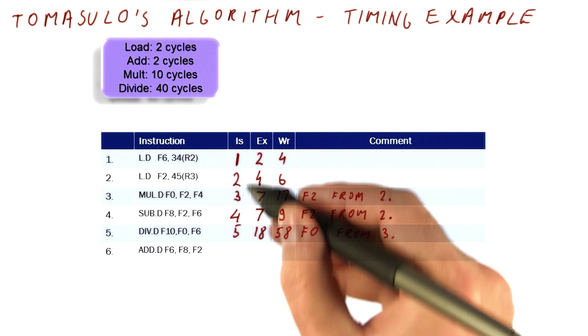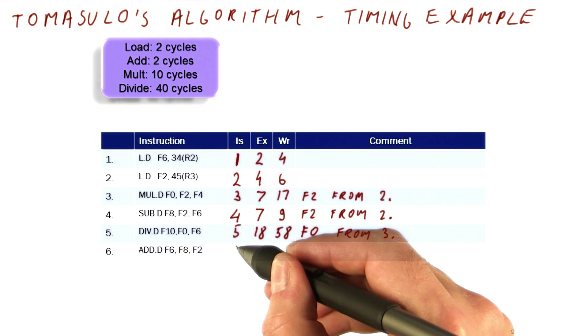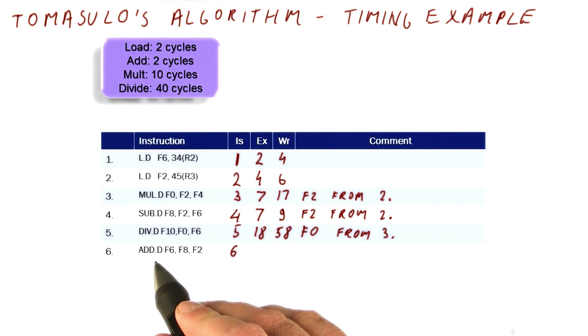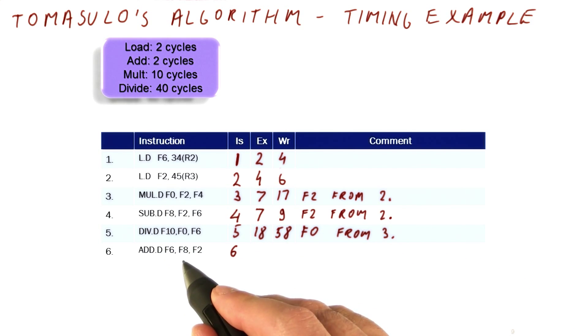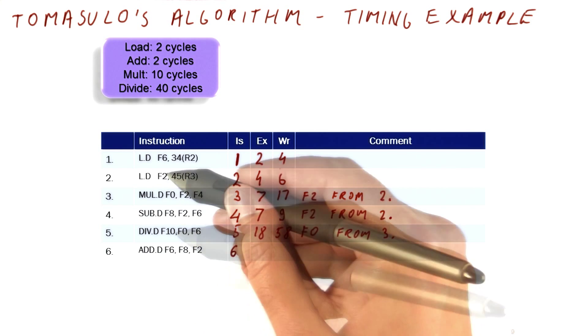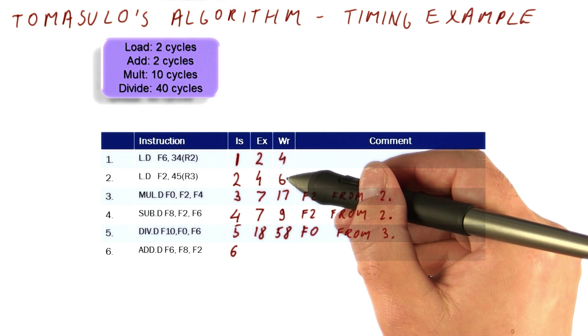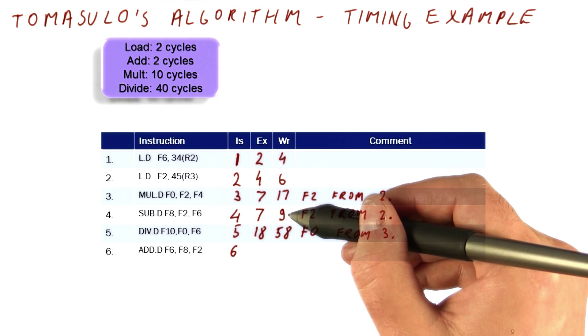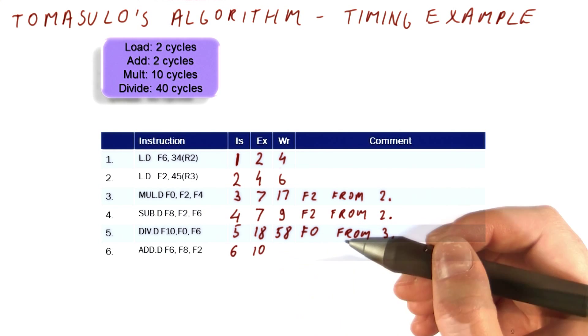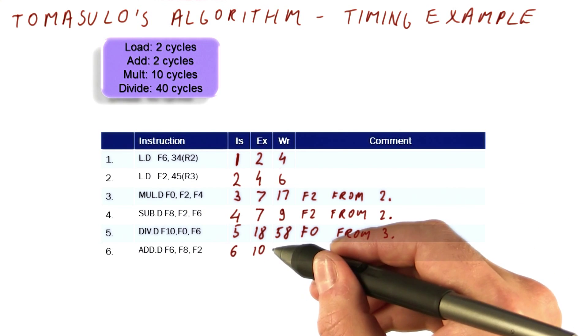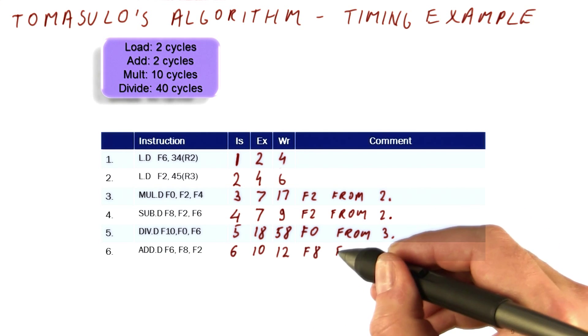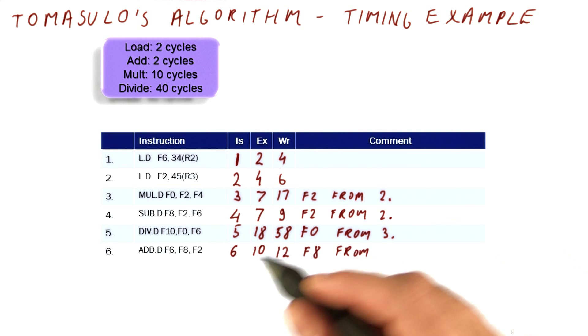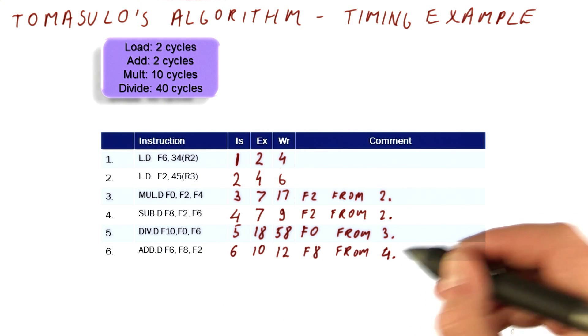Next, we're going to consider what's the next issue cycle. Well, six. This add is going to issue in six, because again, we have units. It's going to look for F8 and F2, whichever is the latest. Two is at six, F8 is at nine. So it's going to start executing in cycle 10, execute in cycle 11, try to broadcast in cycle 12. And we're going to mark that F8 comes from instruction four.